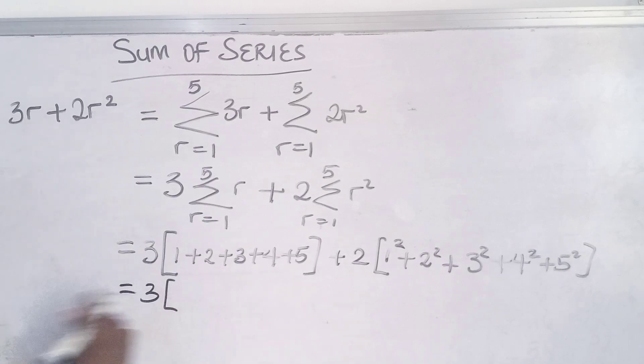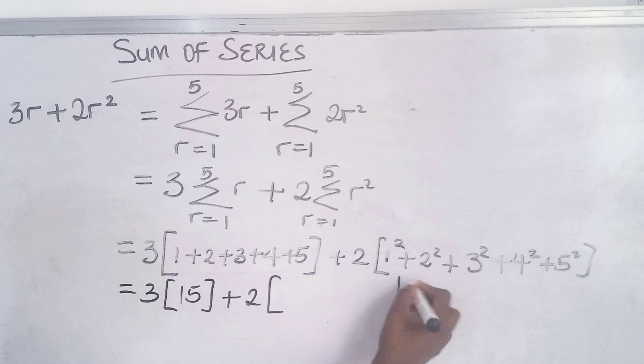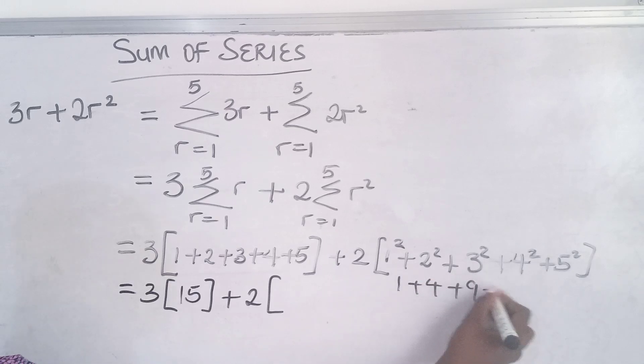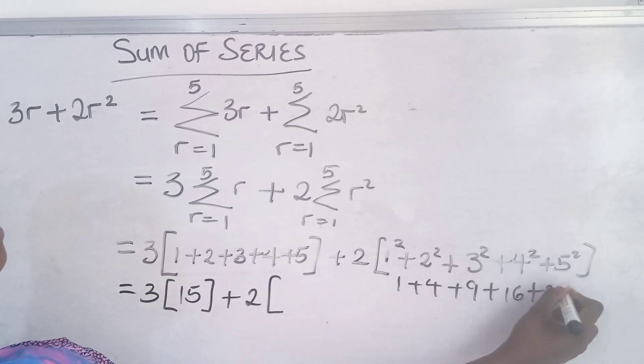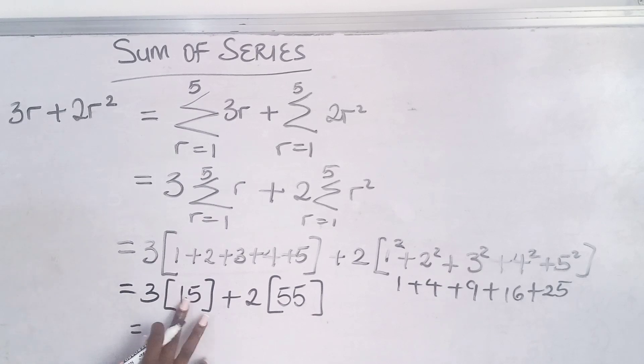This will give us 15. Then for the second part, 1² is 1, 2² is 4, so you have 1 plus 4 plus 9 plus 16 plus 25. When you sum this up, you'll get 55. So 3 times 15 is 45, 2 times 55 is 110.